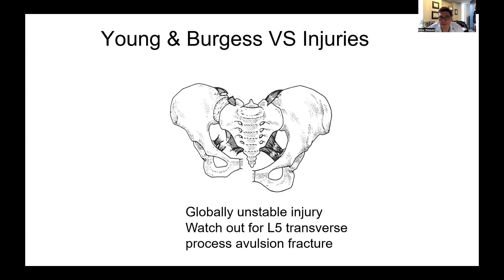Las fracturas verticalmente inestables o fracturas verticales por cizallamiento ocurren frecuentemente por caída de altura, donde una hemipelvis es conducida superiormente. Pueden ser ligamentosas o dislocaciones por fractura con fractura sacra o fracturas de rami, pero en todos los casos hay migración vertical de la hemipelvis. Estos patrones son buenos para tratar con tracción inicialmente para traer la hemipelvis hacia abajo, lo que puede ser útil para lograr la reducción. En el quirófano, hay que tener cuidado con la fractura por avulsión de la apófisis transversa L5, que a menudo es signo de que hubo mucho más desplazamiento en el momento de la lesión de lo que se ve en las radiografías en urgencias.